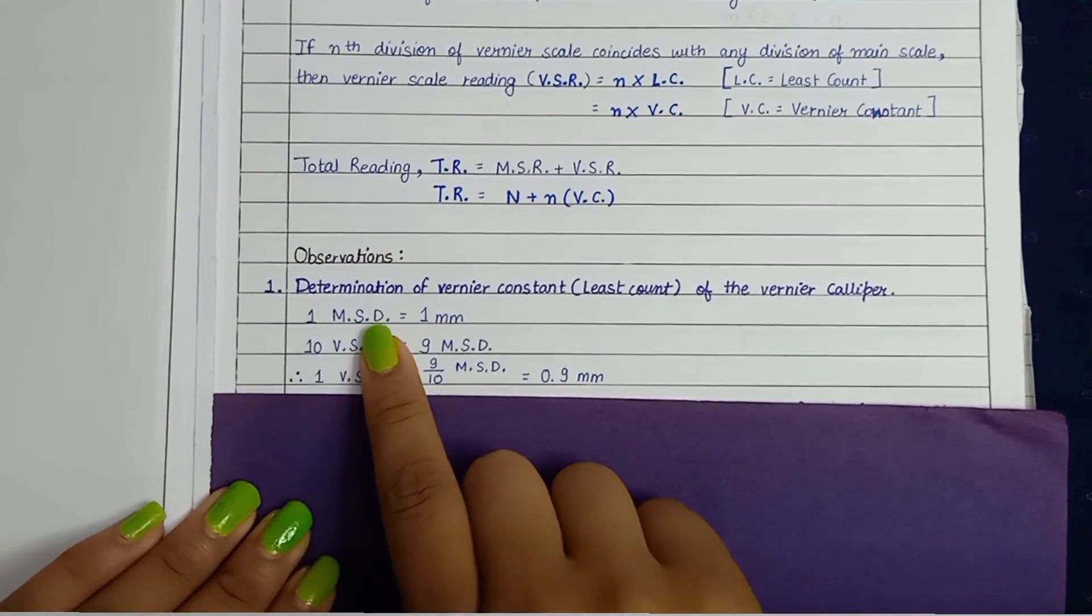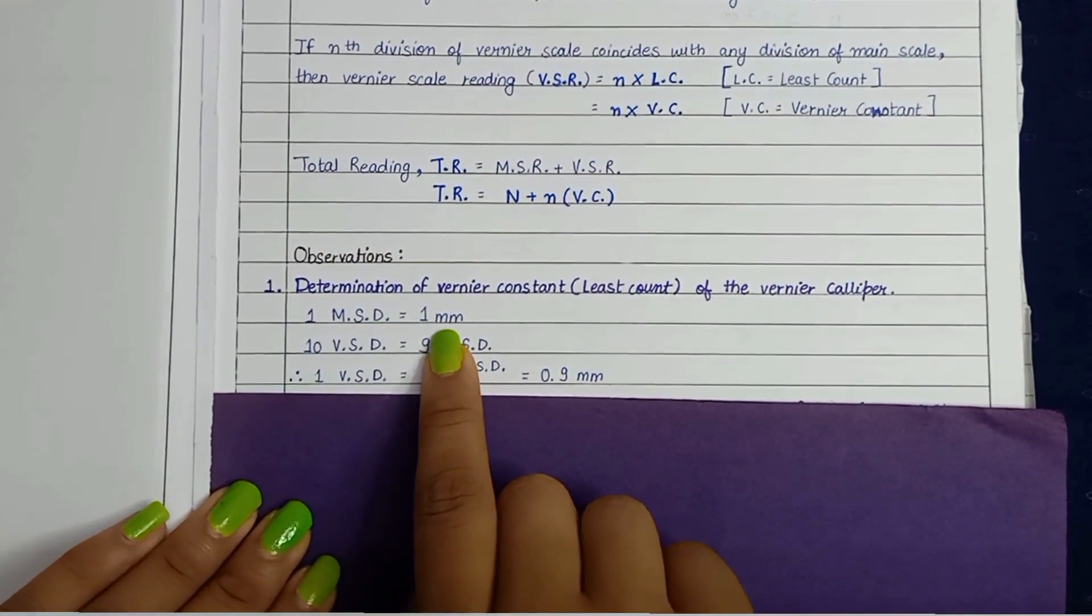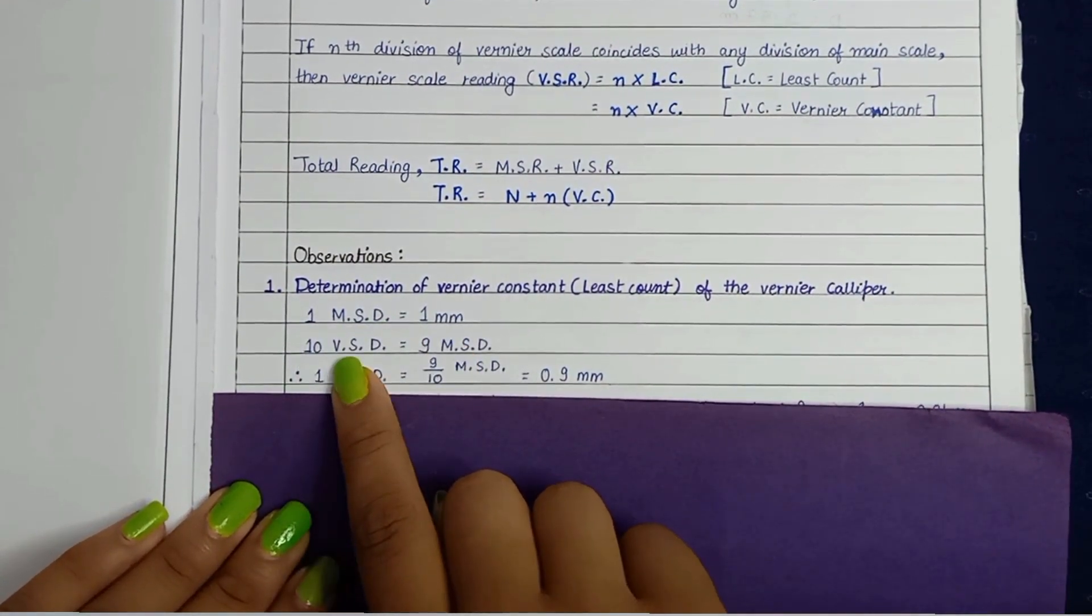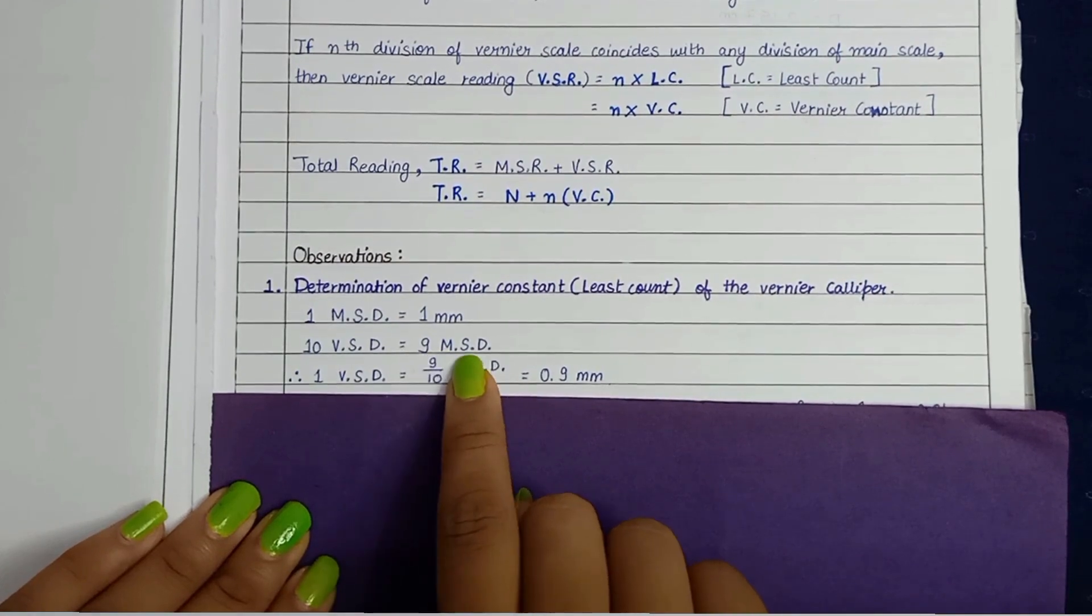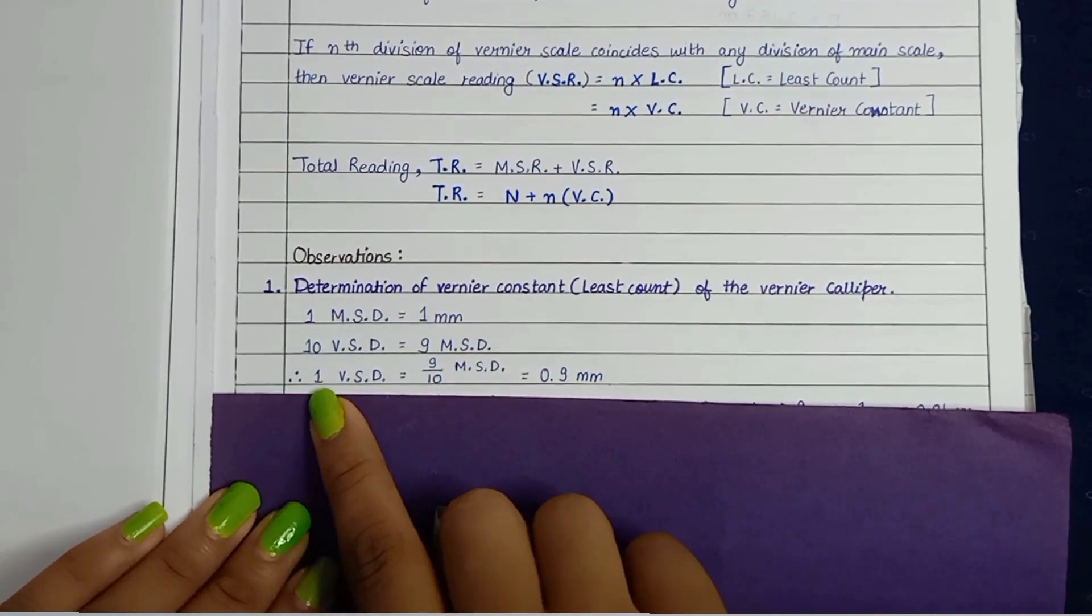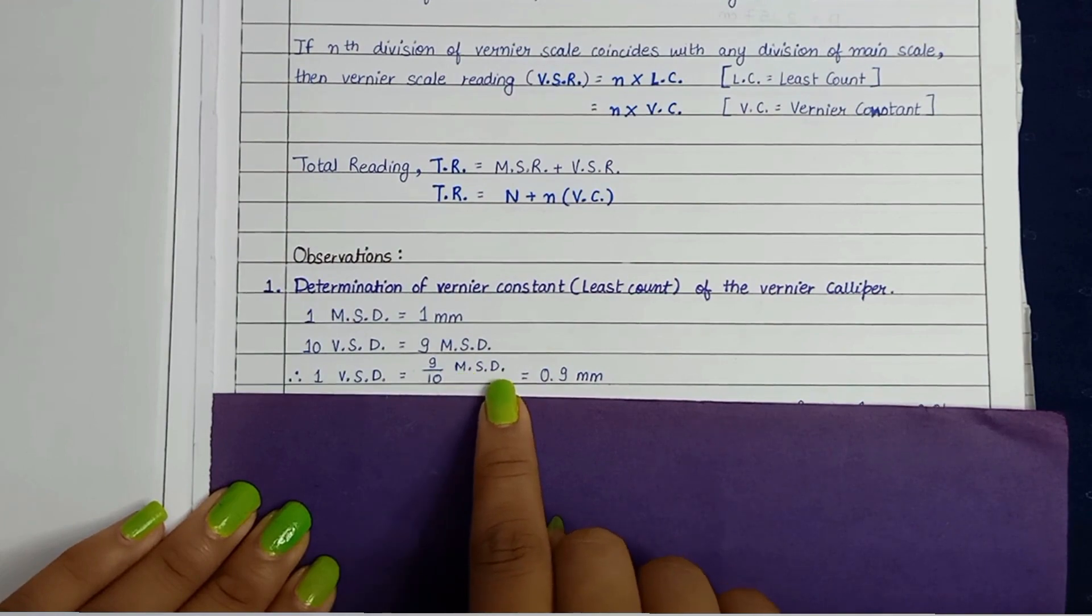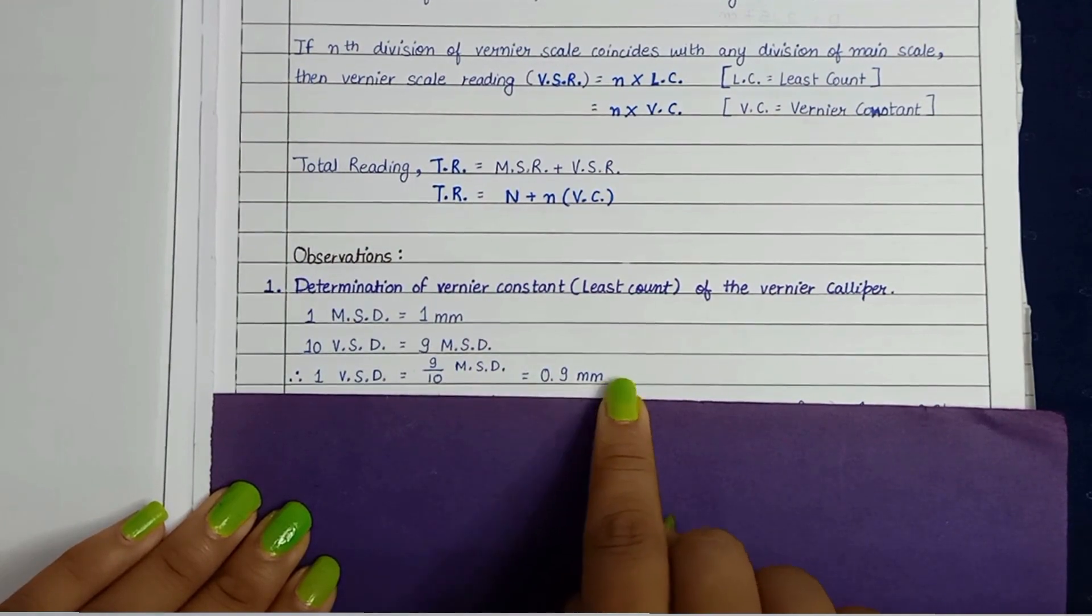As we know that 1 MSD main scale division is equal to 1 mm and 10 vernier scale divisions is equal to 9 main scale divisions. Therefore, 1 VSD is equal to 9 by 10 MSD. Therefore, it is equal to 0.9 mm.